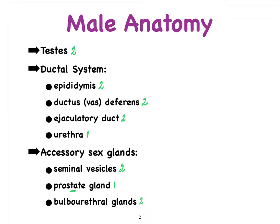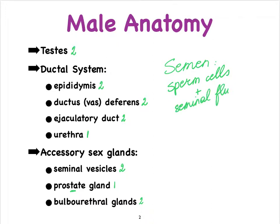Now when I use the term semen, or when we talk about semen, just to make sure that all of you are clear on that — semen mostly includes the sperm cells, and we'll also learn exactly what meiotic phase they're in, together with the seminal fluid that is produced by the sex glands listed here. There's also a little bit of fluid produced by some other cells, but these are definitely the main components.